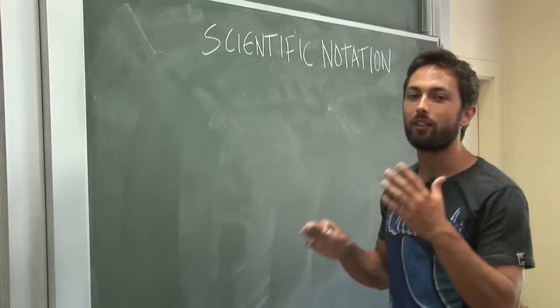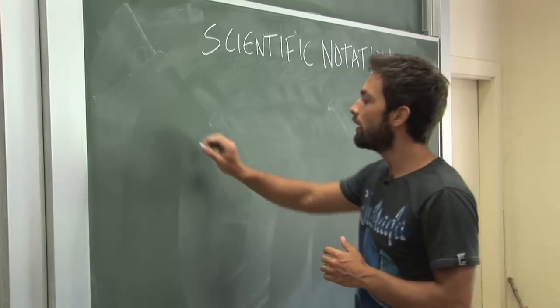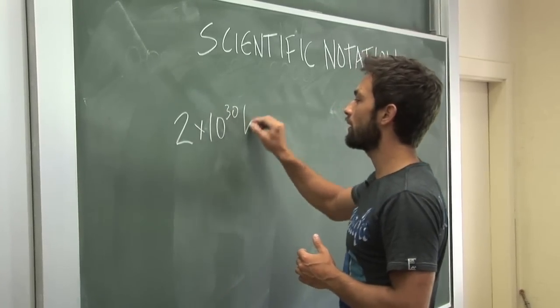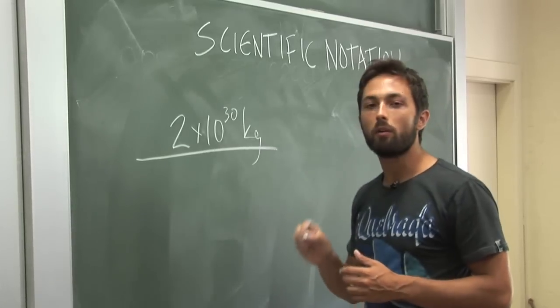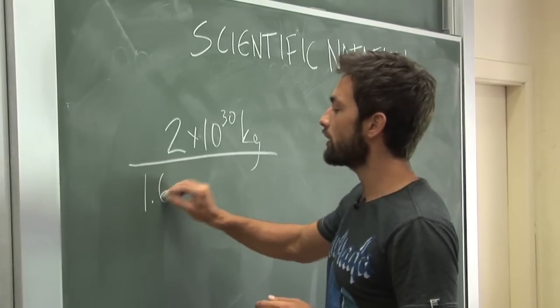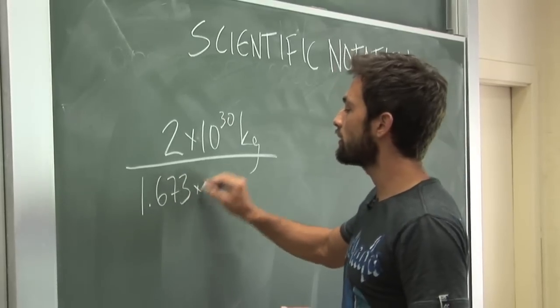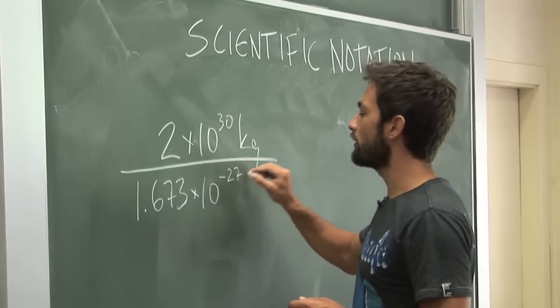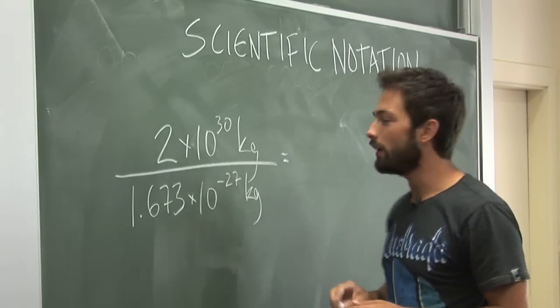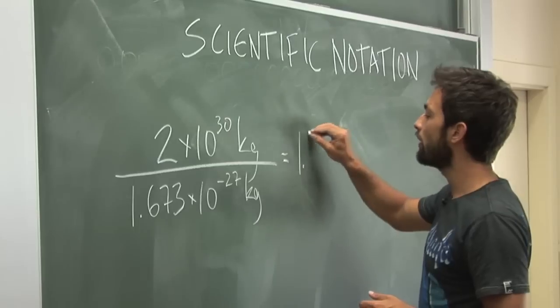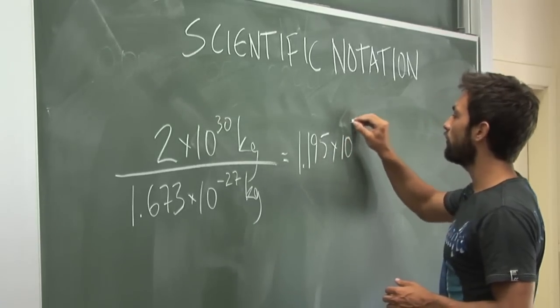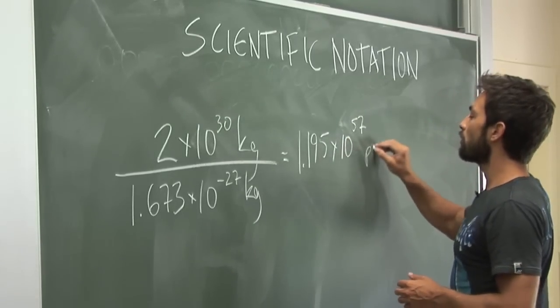Well, we can work that out by taking the total mass of the sun, 2 times 10 to the 30 kilograms, and dividing by the mass of one proton, which is 1.673 times 10 to the minus 27 kilograms. And the answer you'll find is 1.195 times 10 to the power of 57 protons.